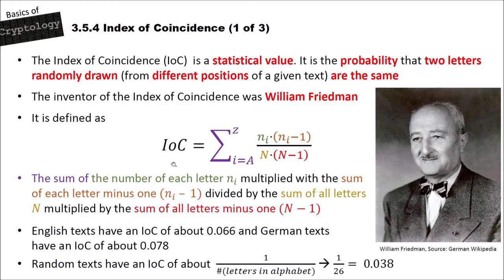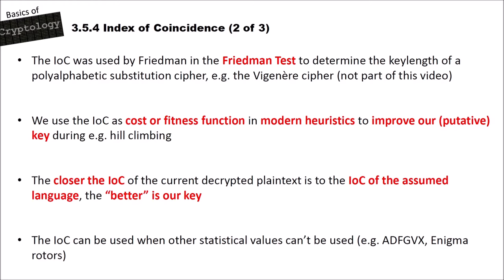We can only differentiate between plain text and polyalphabetically encrypted text using the IOC, because polyalphabetic substitution changes the unigram frequencies. The IOC was invented by William Friedman, who used it in the so-called Friedman test to determine the key length of a Vigenère cipher. Today, we also use the IOC as a cost or fitness function in modern heuristics.